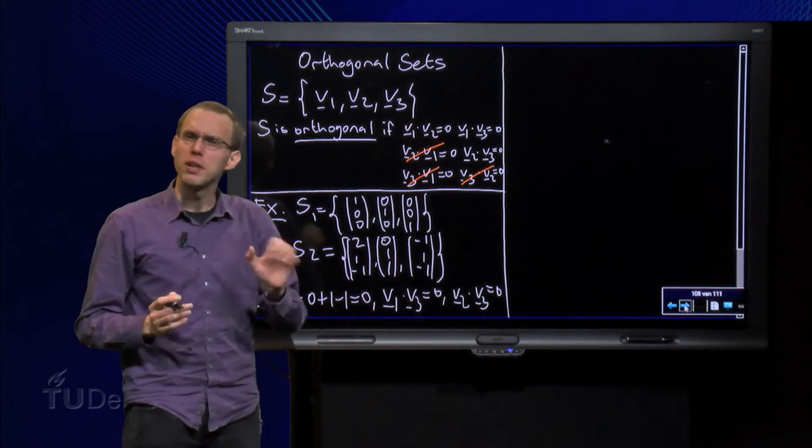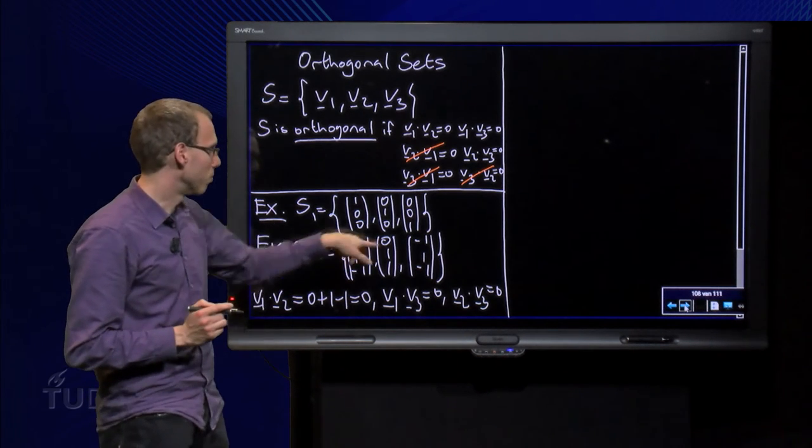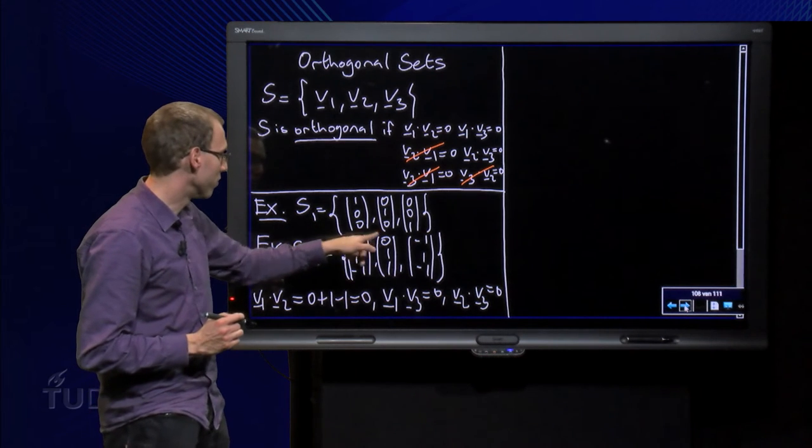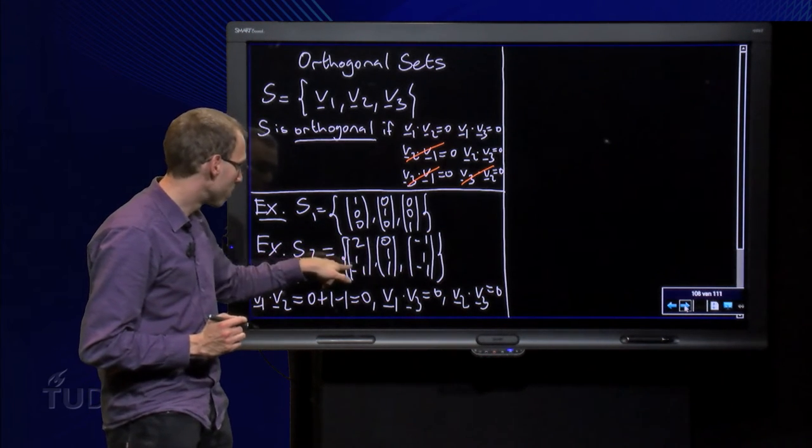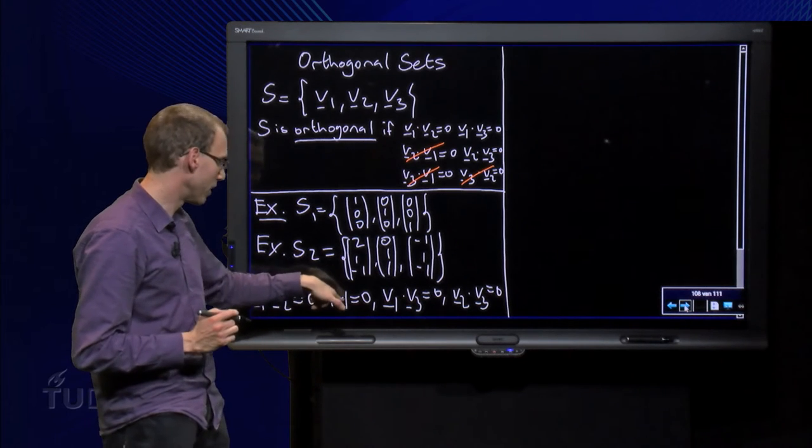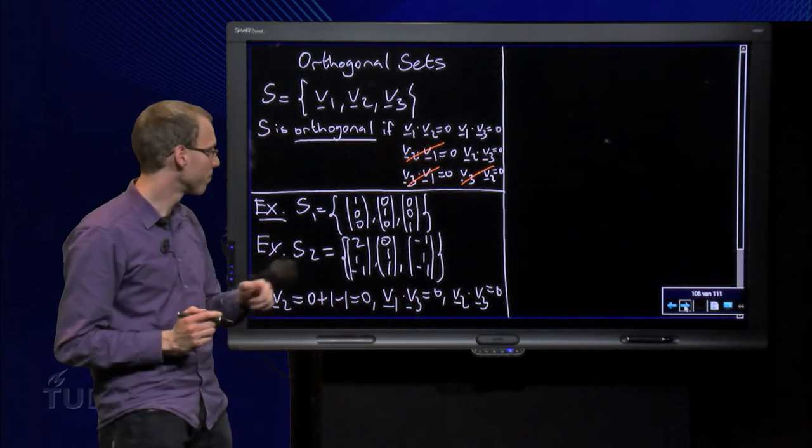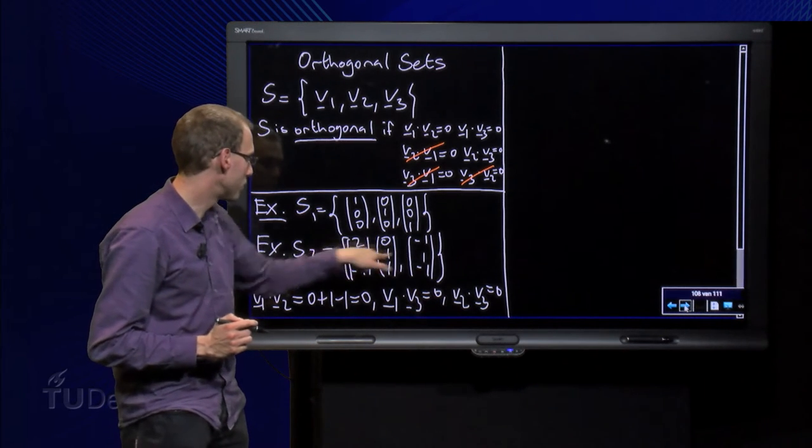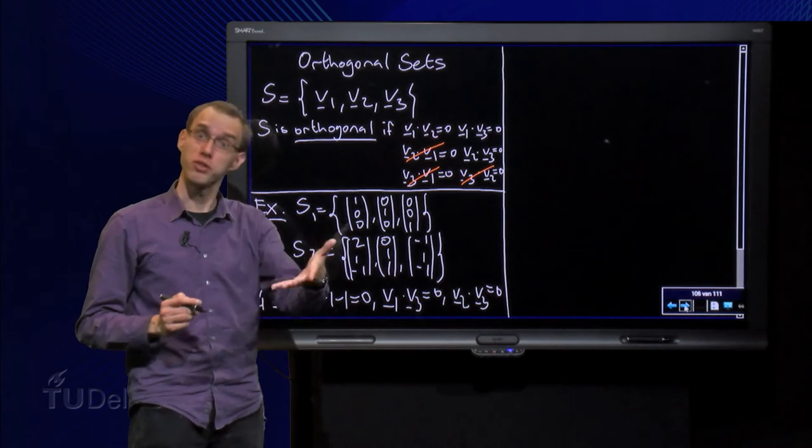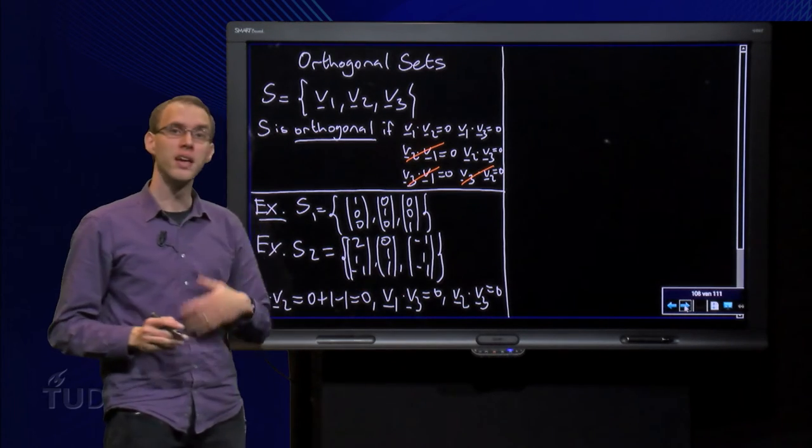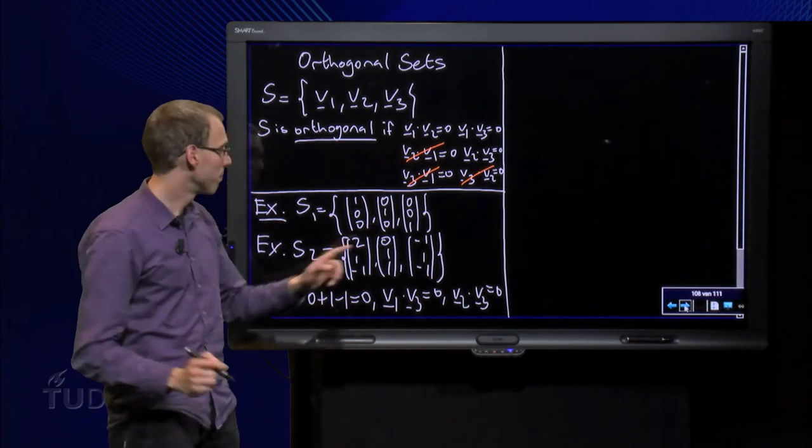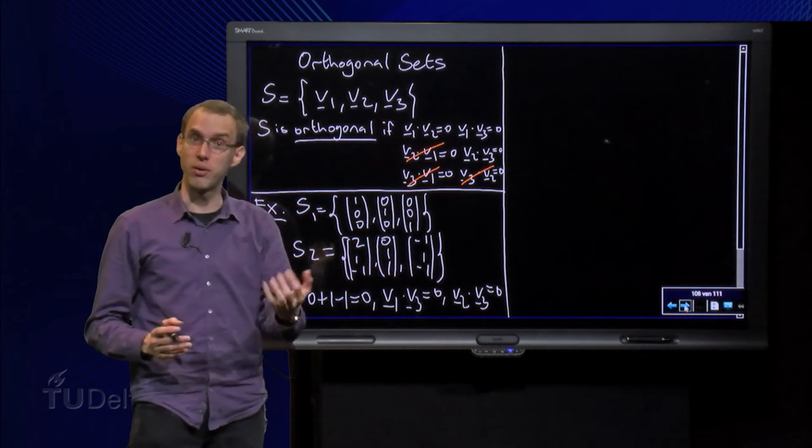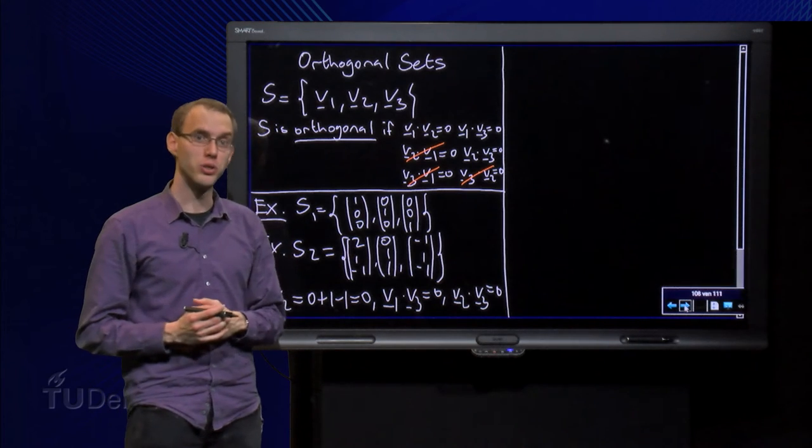For S2 we have to look a bit better, because there are lots more numbers in the vectors. Take the inner product between V1 and V2: we get 0 plus 1 minus 1, 0 plus 1 minus 1 equals 0, that's fine. Between 1 and 3, we get minus 2 plus 1 plus 1 minus 2 plus 1 plus 1 equals 0 as well. Between V2 and V3 we get 0 plus 1 plus 1 minus 1 equals 0 as well, so S2 is an orthogonal set too.